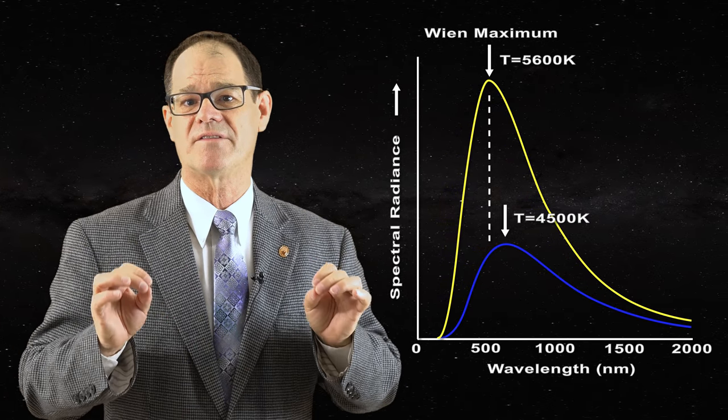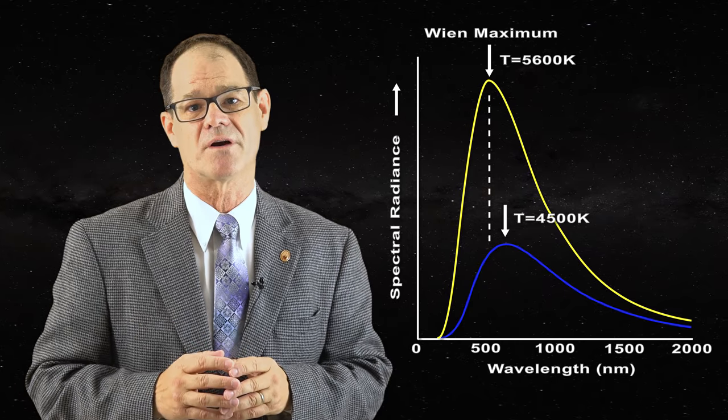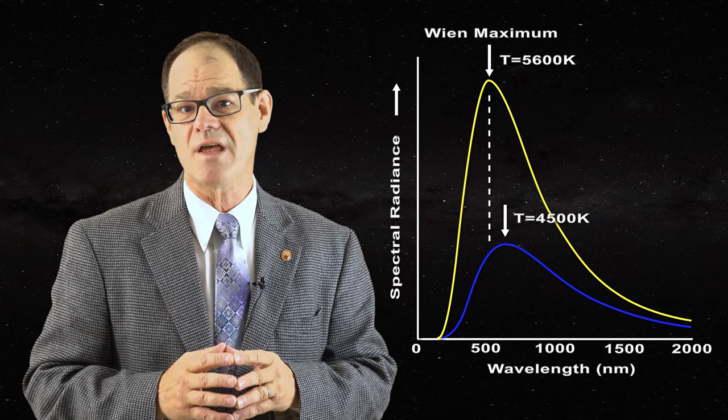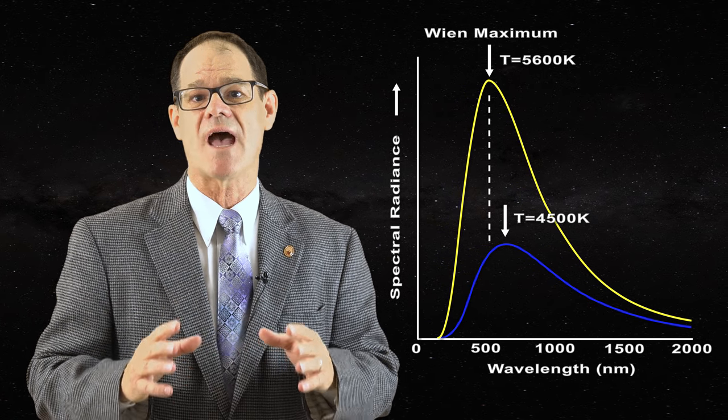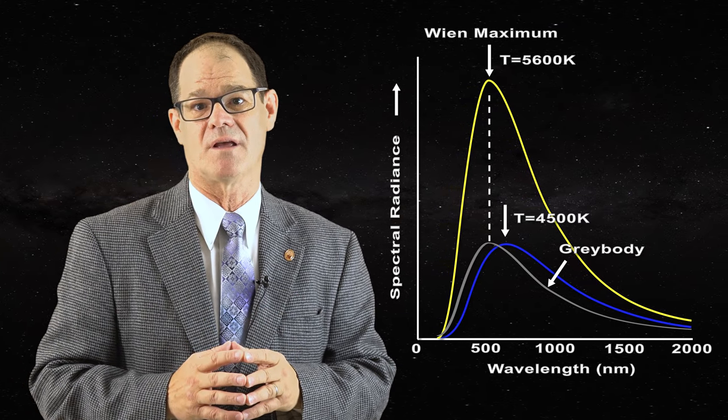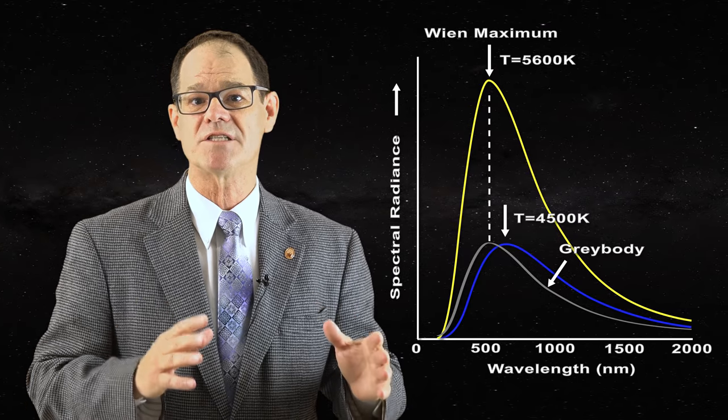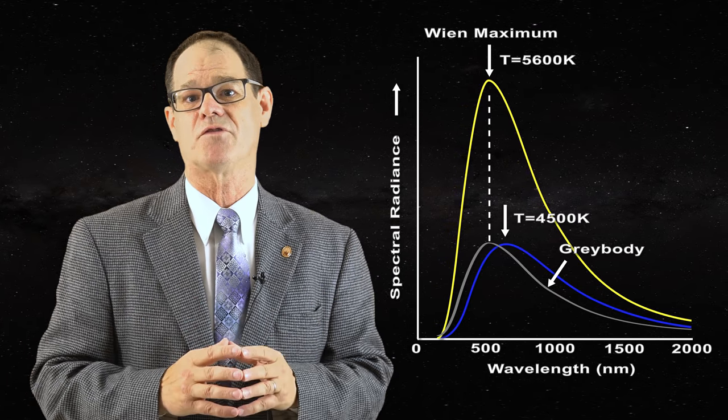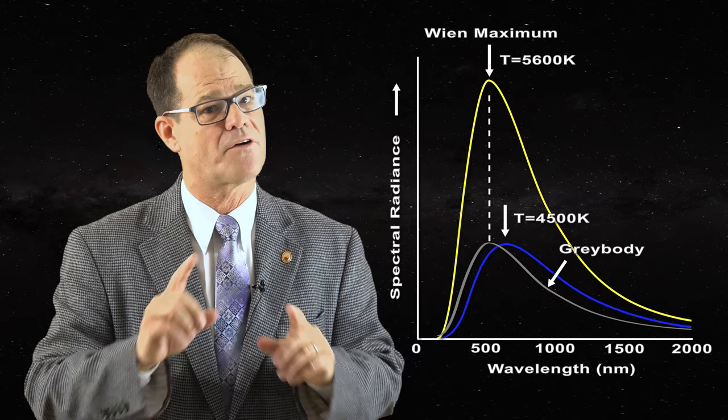Sunspots should be characterized by the same temperature as the photosphere. They are likely to have the same Wien's maximum but since they act as gray bodies, they'll have a reduced total emissivity. That would account for everything and explain why sunspots appear cooler than the photosphere when in fact they are not.